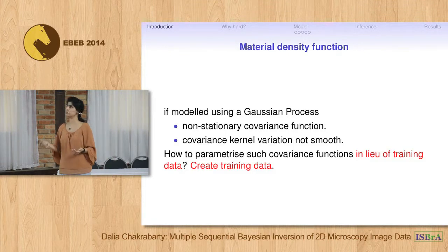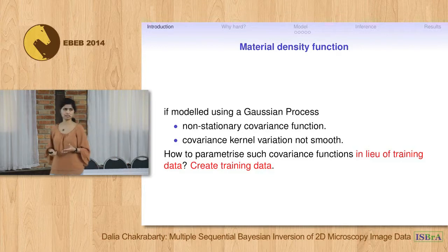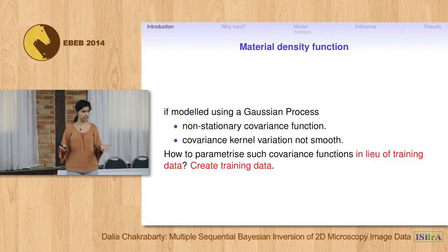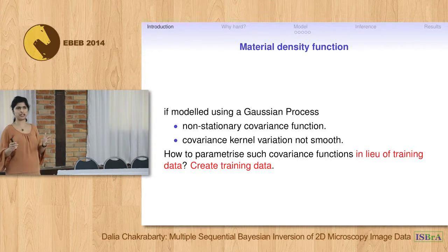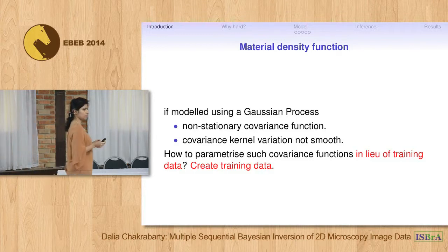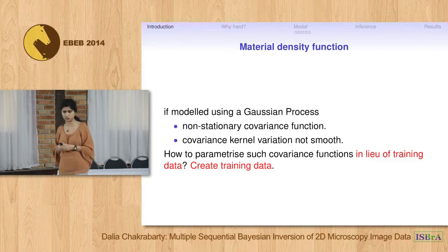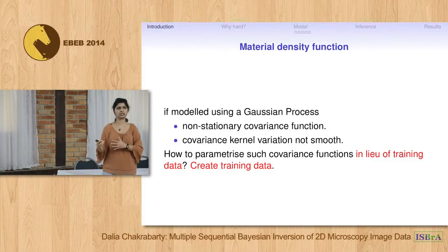If I were to attempt a Gaussian process model, given how discontinuous the density is, I would need to involve a non-stationary covariance function. Parameterizing even a stationary covariance function in the presence of training data is computationally hard but doable. Parameterizing non-stationary covariance functions is very difficult. There is work by Paciurek that attempts to construct covariance kernels of the non-stationary covariance function such that on local scales they mimic stationarity, under the assumption that spatial variation of the kernels is smooth.